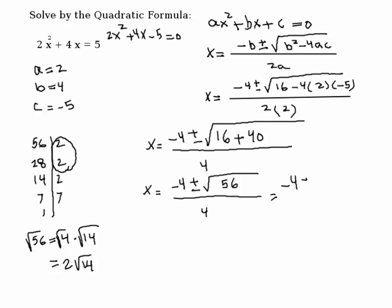So this would be equal to minus 4 plus and minus 2 square root of 14 over 4. Can I reduce this? Yes. How can I reduce this? Divide by 2. You can divide each term by 2. Exactly.